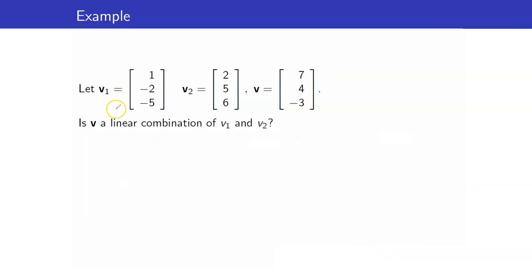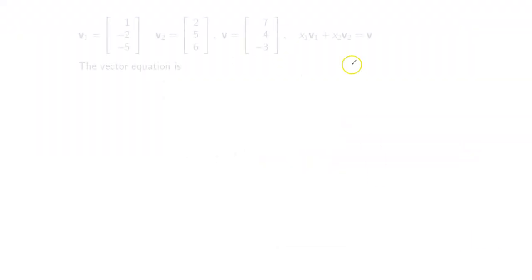So for example here, I have my V1 and V2, and my V is 7, 4, negative 3. Is this a linear combination of V1 and V2? What does this question mean? This is the same as asking ourselves whether we can write V as V1 times something, and we want to know if we have a value for that, and V2 times a scalar. Let's call that X2. This is our vector equation that we are solving. X1 V1 plus X2 V2 equals V.